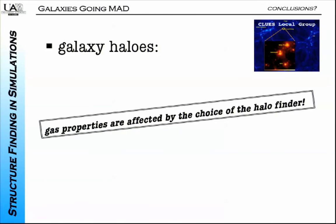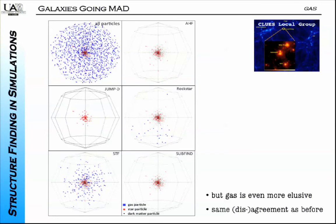For the gas, it is even far messier than for the dark matter. Gas properties of your objects in simulations are heavily affected by the choice of your halo finder. If you pick this halo finder, you will find gas in your halo. If you pick another, you will not find gas in your halo. Gas has additional properties—it has a temperature. Do you take that into account when determining binding? Maybe here, maybe not there. It is messy—messier than what we showed before.